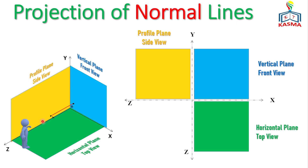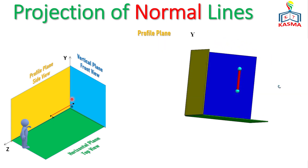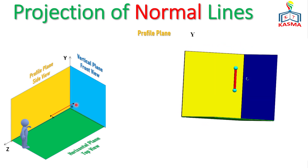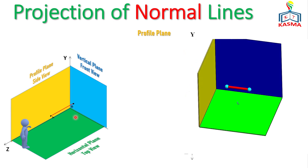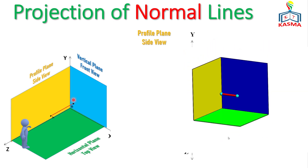If the line is parallel to either one axis and perpendicular to the other two axes, we call it a normal line. In this case, this line is parallel to the Z axis but perpendicular to the X and Y axes. A vertical line can also be a normal line if it is parallel to either of the three axes. So we call it a normal line.